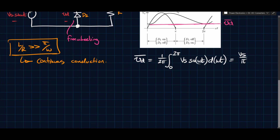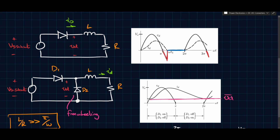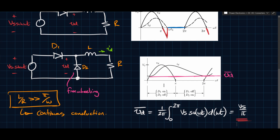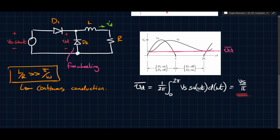The maximum value of Vd here is independent of L or R, meaning you can make L as large as you want for filtering purposes. In the previous case without D2, Vd depended on L, because L influenced how the current and voltage are displaced, affecting how far the voltage dips into the negative region. With D2, the circuit behaves like the resistive load case, except the current is displaced. We still benefit from the filtering provided by the inductor.